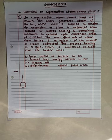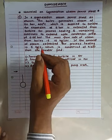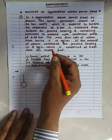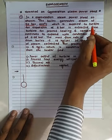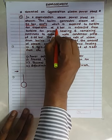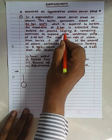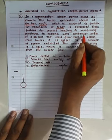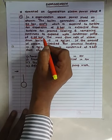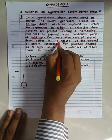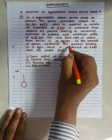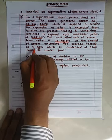In a cogeneration steam power plant, the boiler generates steam at 50 bar and 400 degrees centigrade, which is supplied to the turbine for expansion. At 5 bar, steam is extracted from the turbine for process heating, and the remaining steam continues to expand up to a condenser pressure of 0.05 bar. So three pressures come into picture: 50 bar, 5 bar, and 0.05 bar. The mass flow rate of steam from the boiler is 15 kg per second, and the amount of steam extracted for process heating is 5 kg per second.